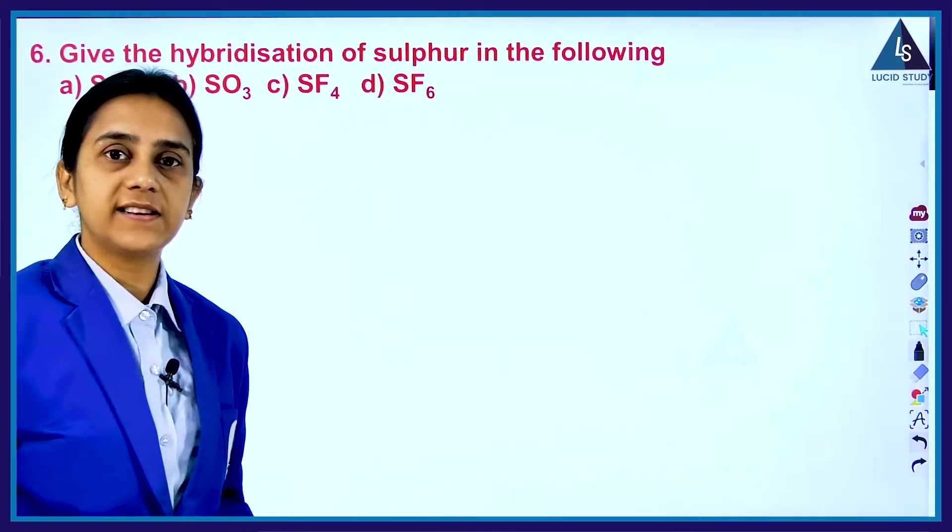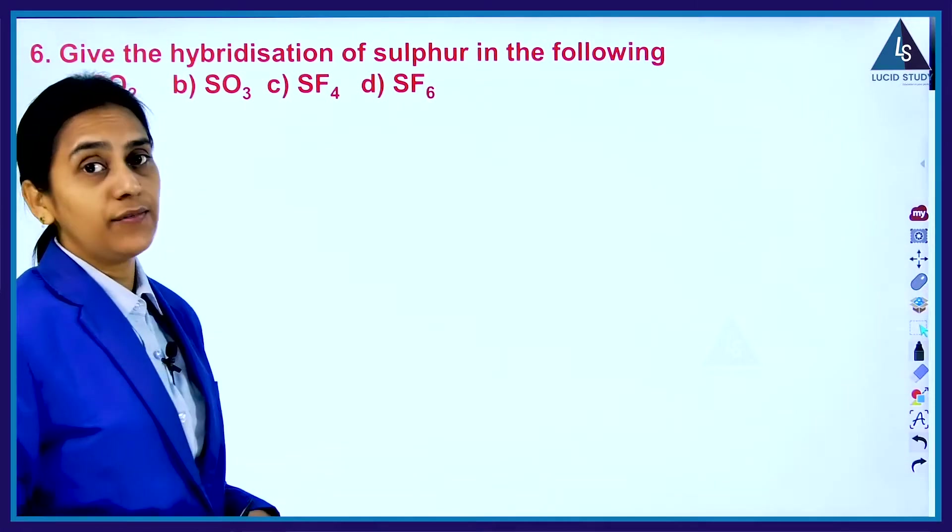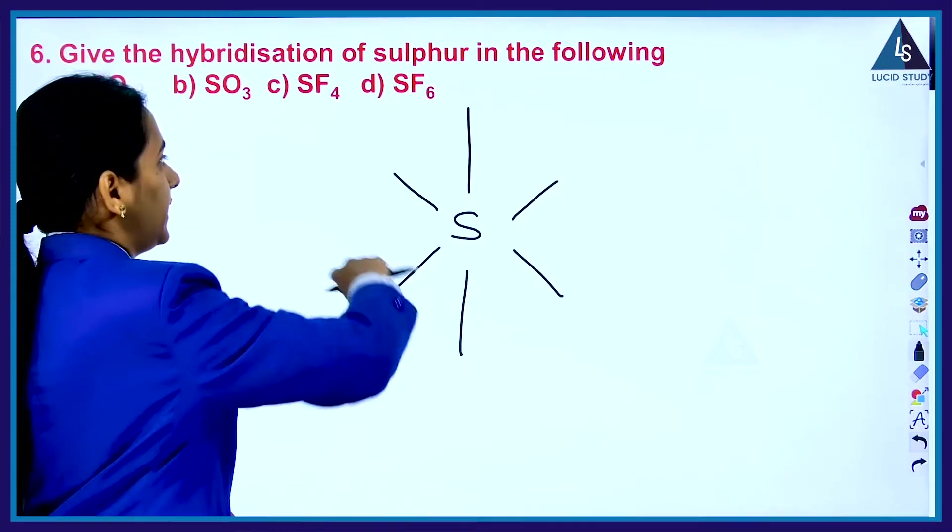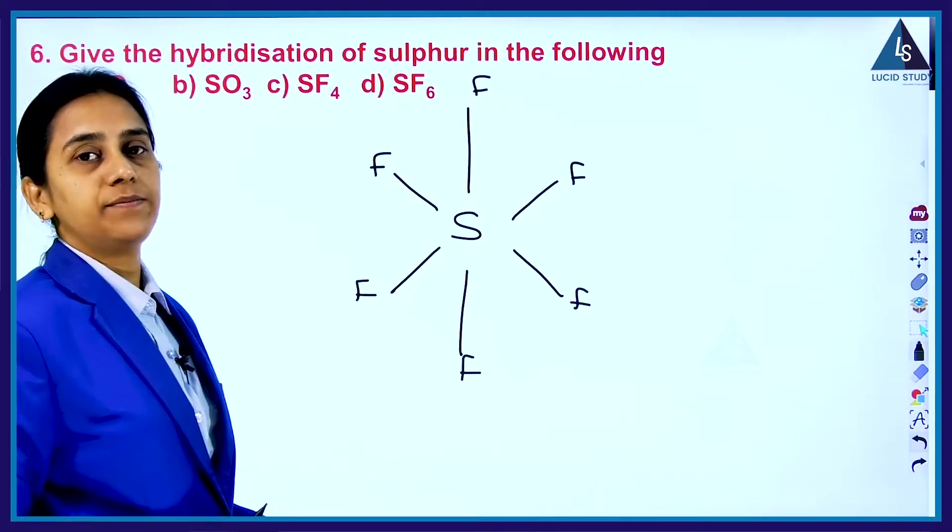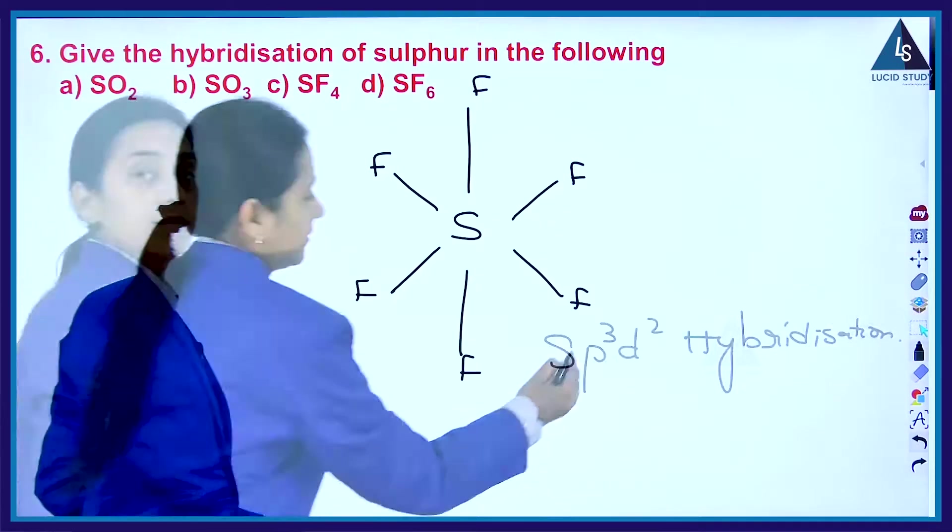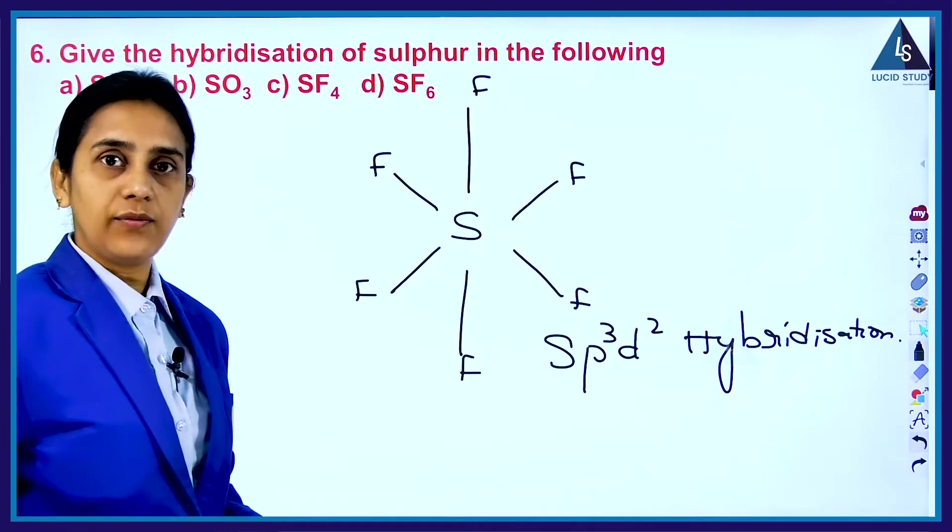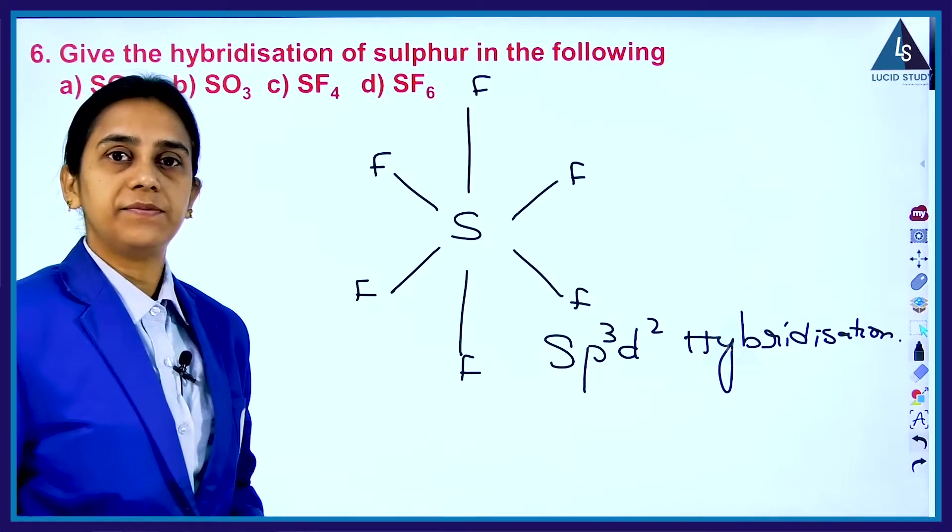The next is SF6 molecule, sulfur hexafluoride. Sulfur is a central atom and six fluorines are bonded in an octahedral manner, and it undergoes SP3D2 hybridization. The sulfur atom in SF6, that is sulfur hexafluoride, the hybridization is SP3D2.